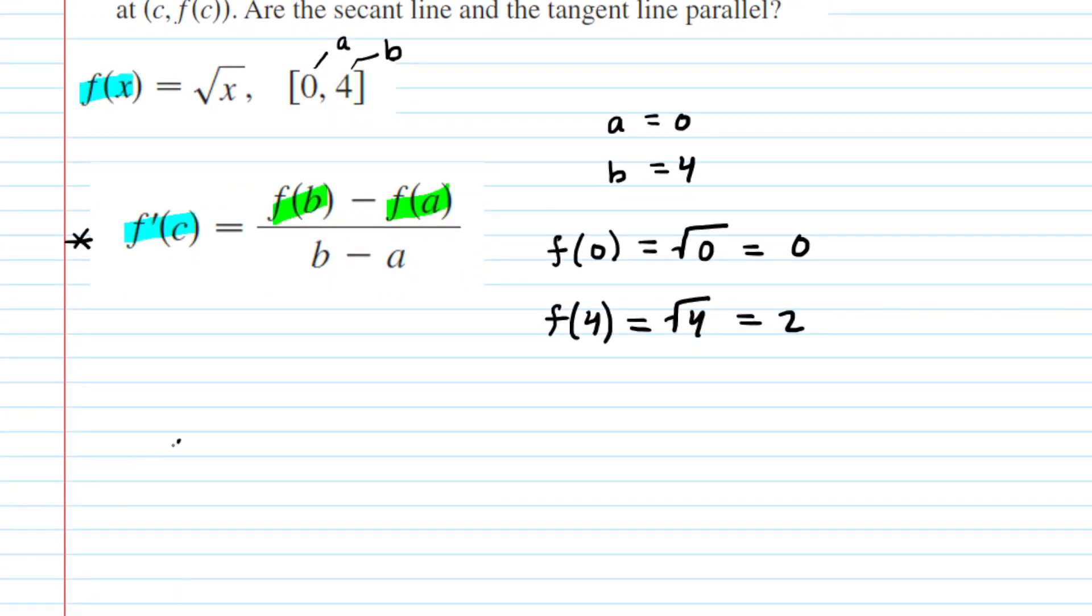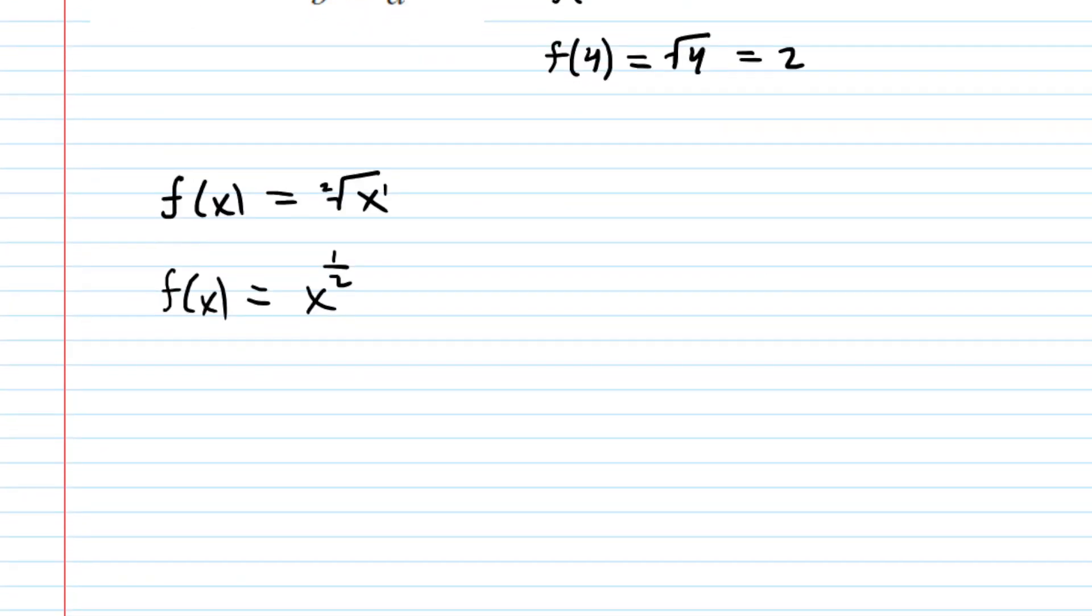So we'll scoot down here and we will rewrite the function. So we have f(x) is equal to the square root of x, and when taking the derivative of this particular function it's going to be useful to rewrite the square root in terms of an exponent. Now with the square root we have an implied 2 for the index of the root, and then we have a power of 1. So we're going to rewrite this in exponential notation as x to the power of 1 over 2.